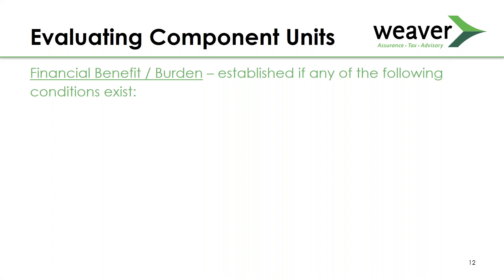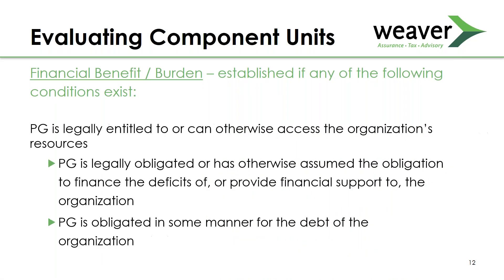Financial benefit or burden can be established if any of the following conditions exist: if the government is legally entitled to or can otherwise access the organization's resources, there is a financial benefit relationship. If the government is legally obligated or has assumed the obligation to finance the deficits or provide financial support, there is a financial burden relationship. If the government is obligated for the debt of the organization, that also creates a financial benefit or burden relationship.